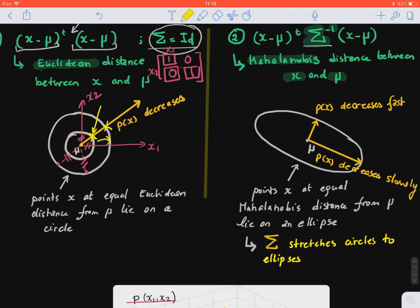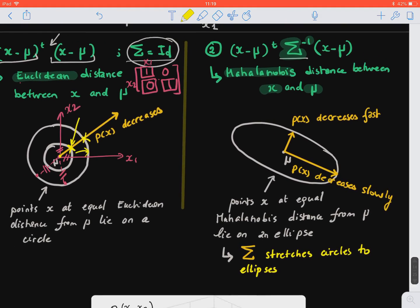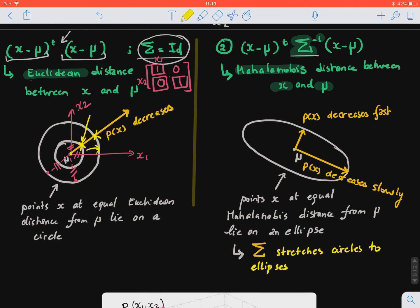Now, for the Mahalanobis distance, we notice that because of the multiplication or this center, the covariance matrix, the inverse of the covariance matrix, we don't have circles anymore because our covariance matrix is not necessarily equal to the identity matrix.